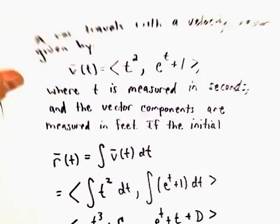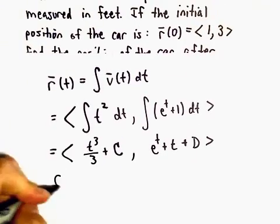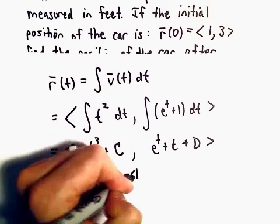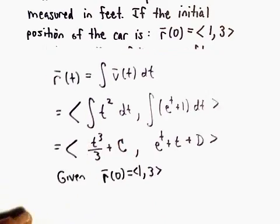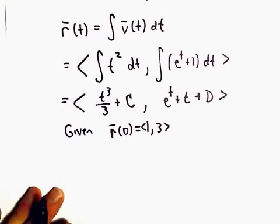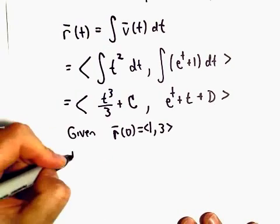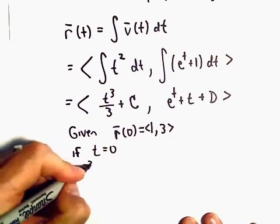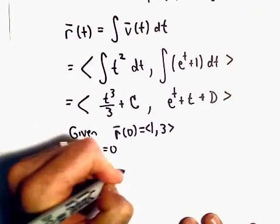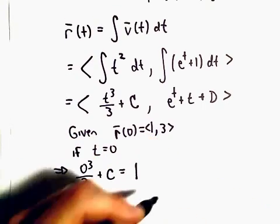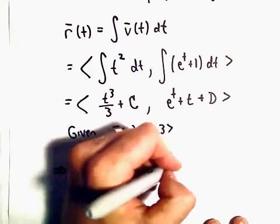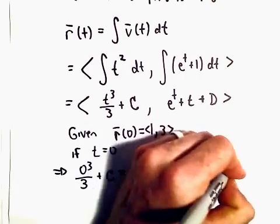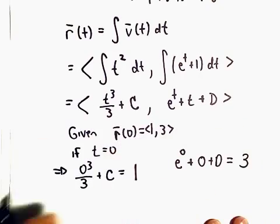All right, so, but we were given an initial condition. We were given that r(0) equals the vector with components 1 and 3. So now what we can do is simply plug that in. Okay, so it says if t equals 0, the first component, we would get 0³/3 + c. That would have to equal the first component of 1. And likewise, if we plug in t equals 0, we would get e⁰ + 0 + d. That would have to equal the second component, which is going to be 3.